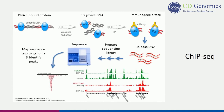Chromatin immunoprecipitation sequencing (ChIP-seq) can provide whole-genome mapping of DNA-binding protein sites. This approach has become an indispensable tool for investigating gene regulation and epigenetic mechanisms.